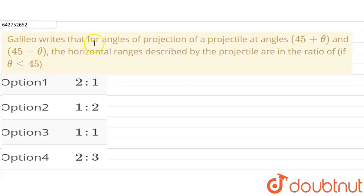Galileo writes that for angles of projection of a projectile at angles 45° + θ and 45° - θ, the horizontal ranges described by the projectile are in the ratio of, if θ is less than 45°.